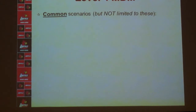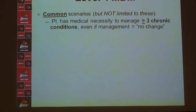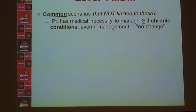It's important to understand what a Level 4 visit looks like. One of the most common presentations is a patient who comes in for management of three or more chronic conditions. Even if you make no changes to their care, you may have to decide that no changes were needed. For example, a patient comes in for a six-month follow-up on hypertension, diabetes, and high cholesterol. You manage all three, find diabetes and cholesterol well-controlled but blood pressure out of control, and see them back in a week. A week later, there's no medical necessity to manage the well-controlled conditions again, so you can't bill for three chronic conditions in that situation.